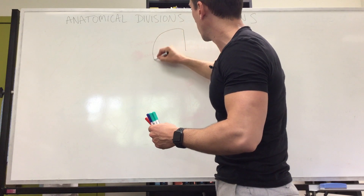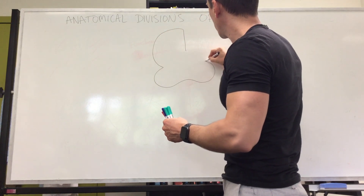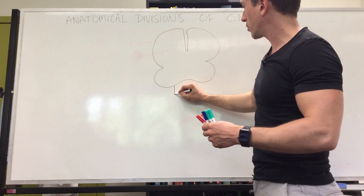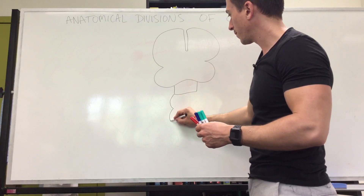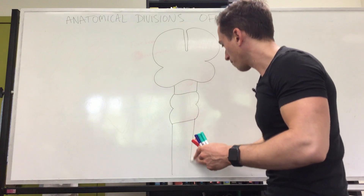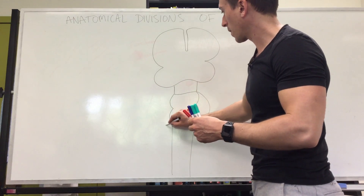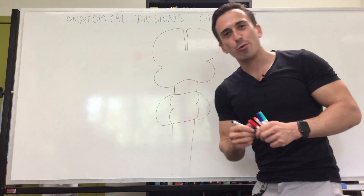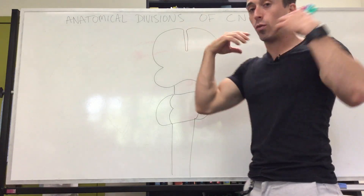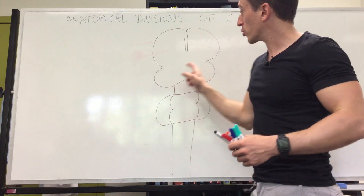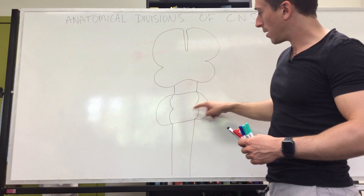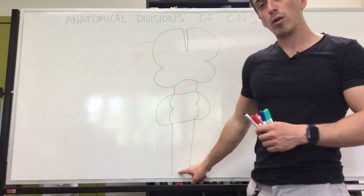Let's first draw up the cerebrum. What I've drawn is what we think of as the brain itself — the cerebrum. Then we've got the midbrain, then the pons, the medulla, the cerebellum, and then the spinal cord.